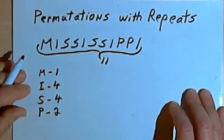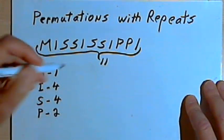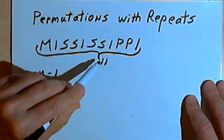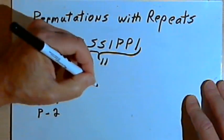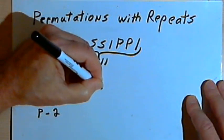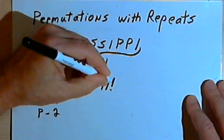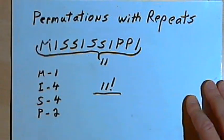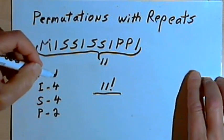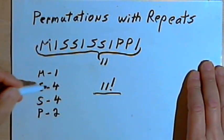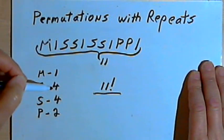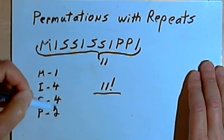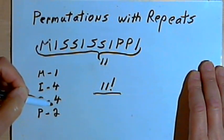And the formula we're going to use is really fairly simple. All we're going to do is take the total number of letters, which once again we can think of as n, and we'll use the factorial version of that. So we'll have n factorial, or in this case 11 factorial. And then for each of the elements that repeats, we're going to put in the denominator the factorial version of that element. We'll multiply them all together.